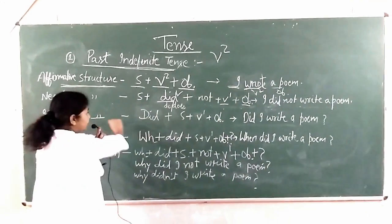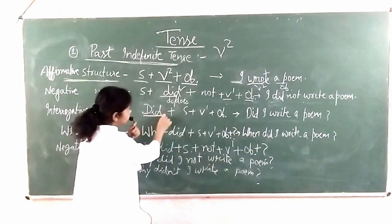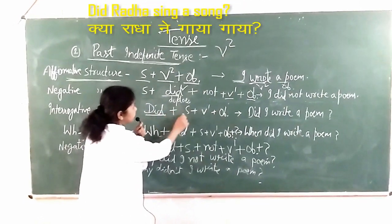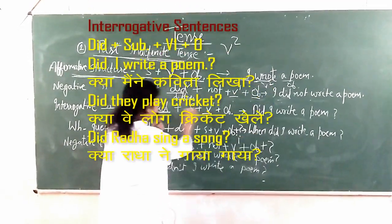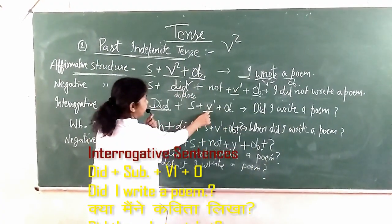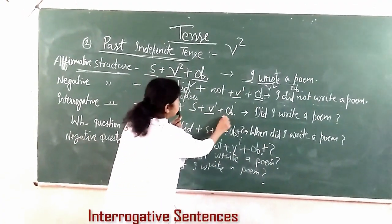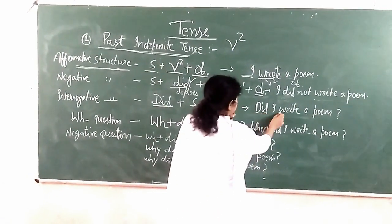In interrogative sentences, the structure is: Did + subject + V1 + object. For example, did I write the poem? Kya maine kavita likhi?